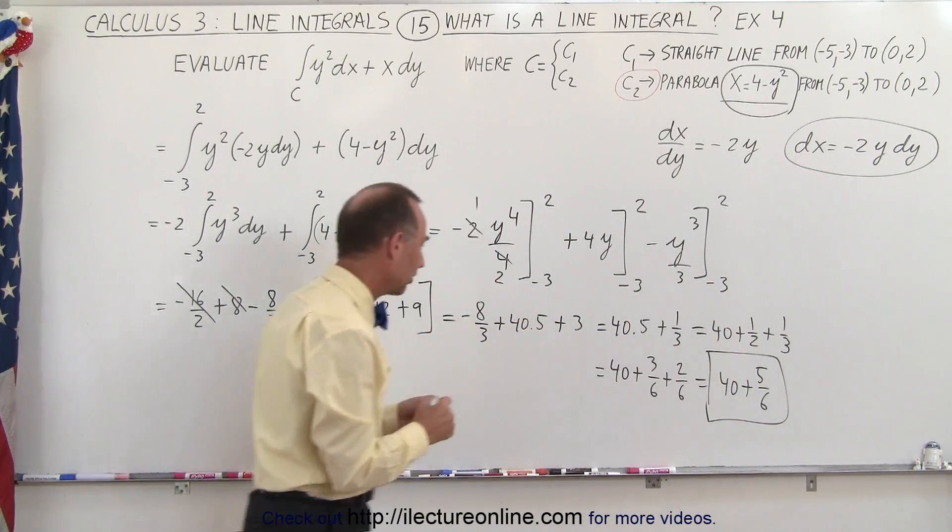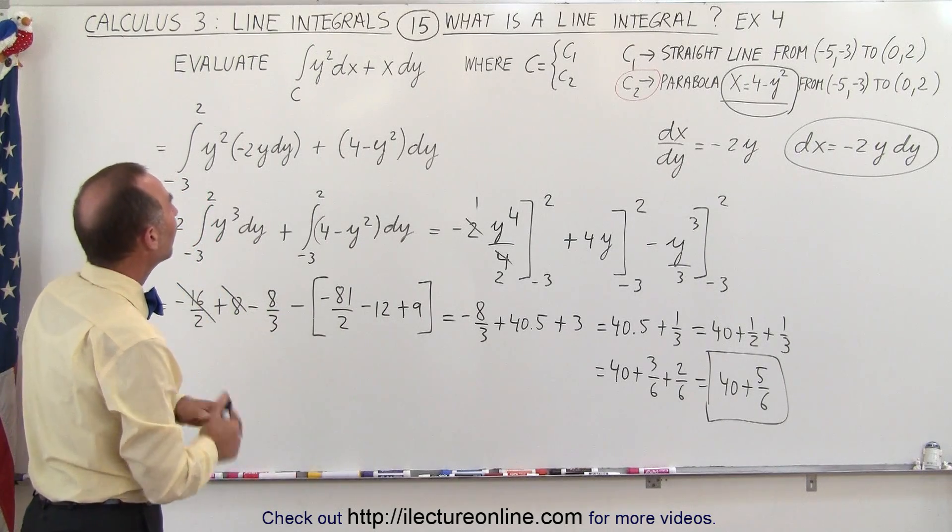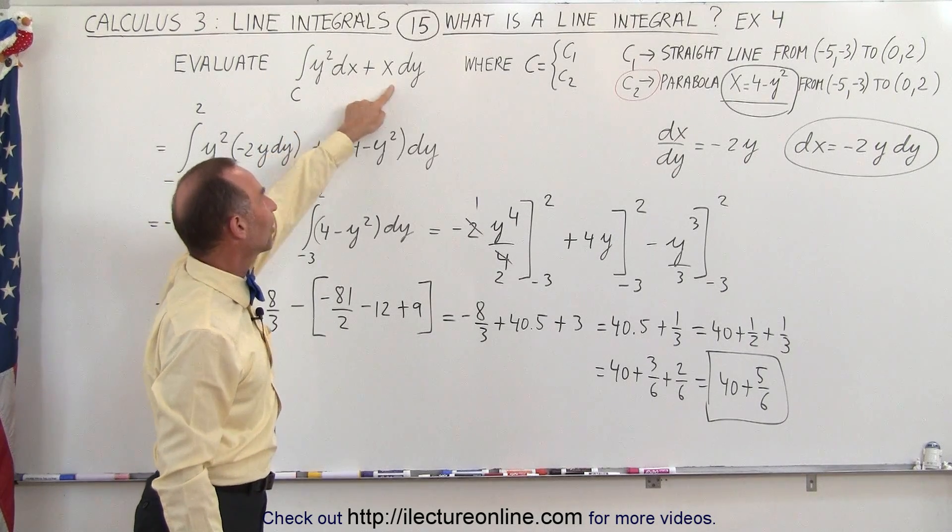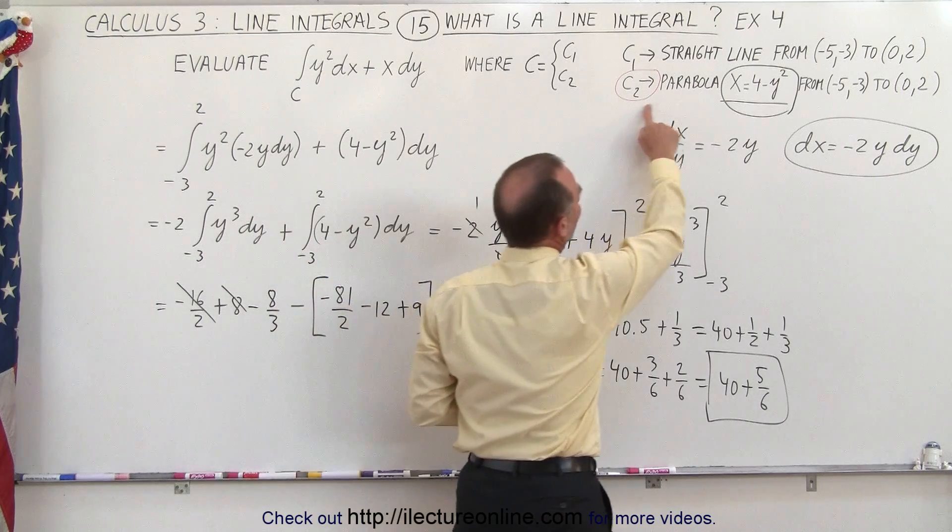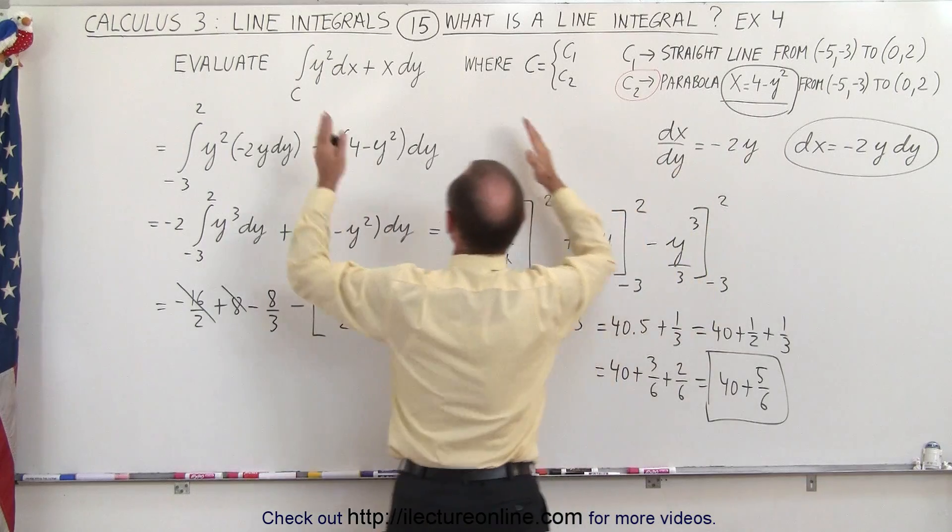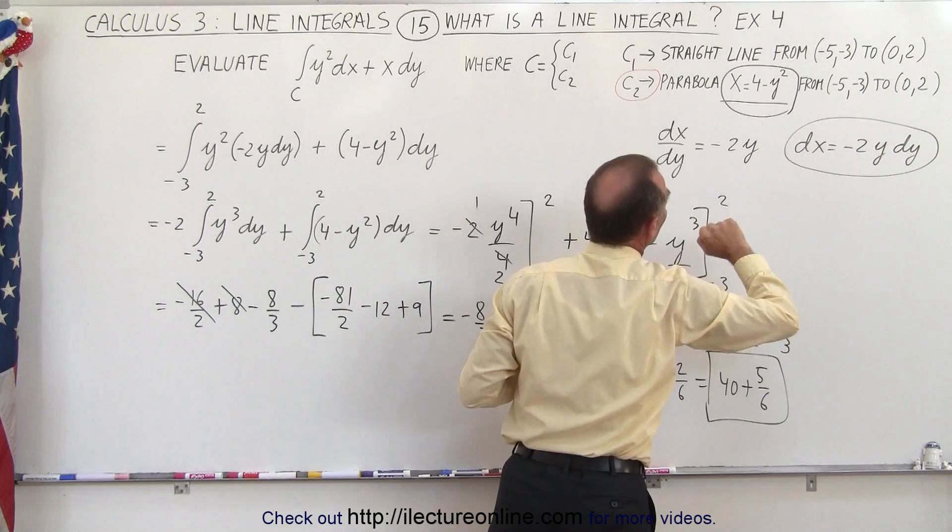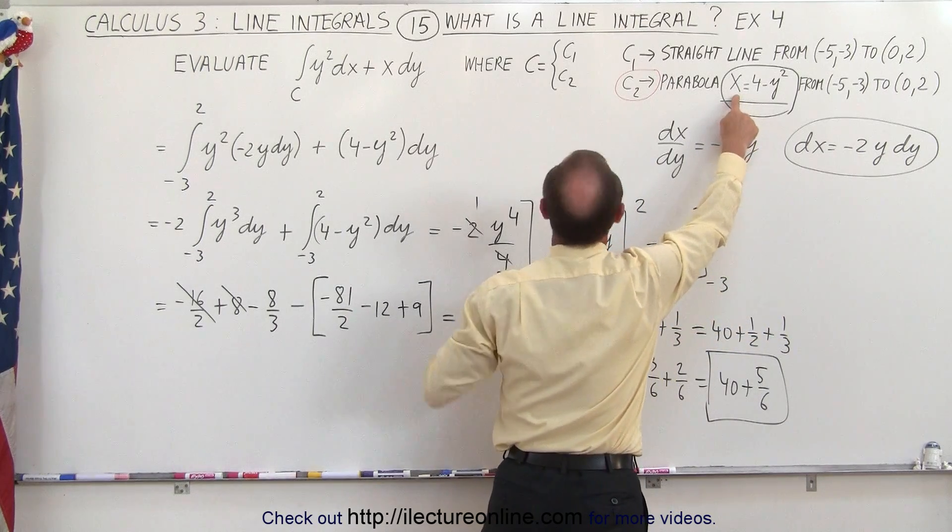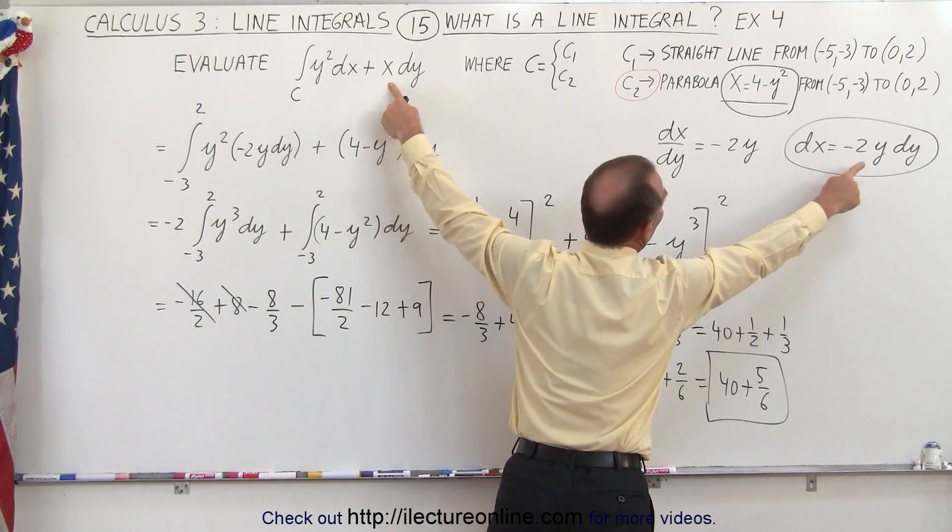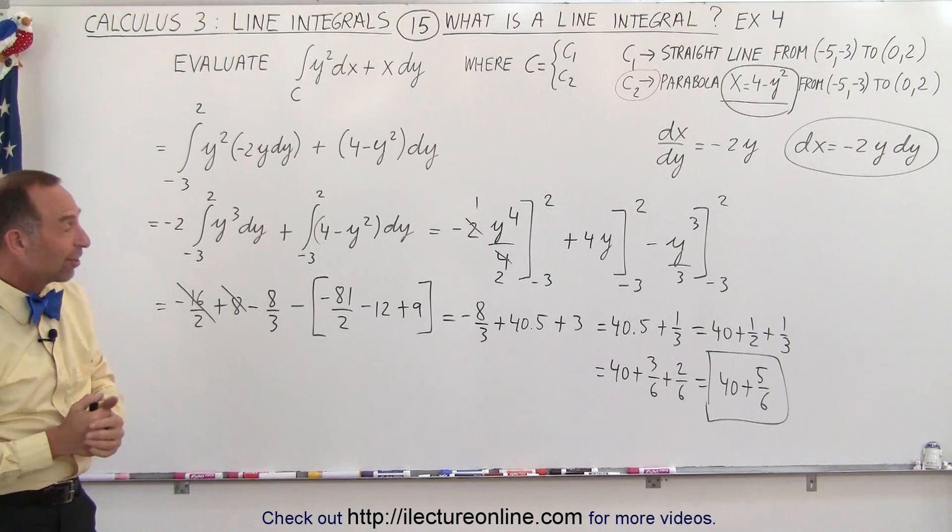So to summarize, we started with the integral with y's and x's and the curve x equals 4 minus y squared. We realized we can express everything in terms of y with limits from minus 3 to positive 2. The x can be replaced by 4 minus y squared, the dx by minus 2y dy, and ultimately this gives us the result. That's how it's done.